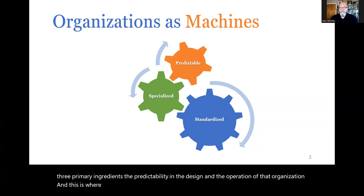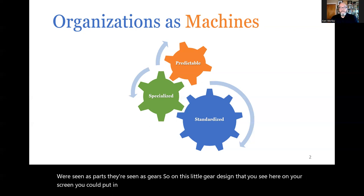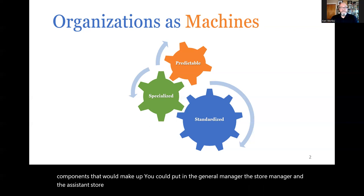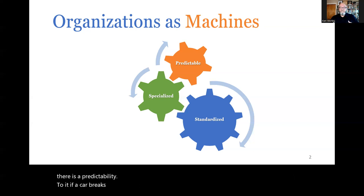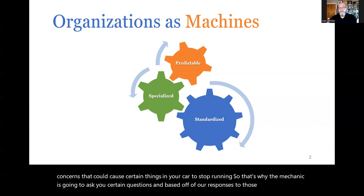This is where it comes into play that even the employees — the people themselves — are seen as parts, as gears. On a gear design, you could put in managers, employees, and owners, or the general manager, store manager, and assistant store manager, depending on the type of organization. There is a predictability to it. If a car breaks down, we take it to somebody who knows there are predictable concerns that could cause certain things in your car to stop running. The mechanic asks you questions, and based on your responses, they start to predict what might be wrong and how to fix the machine — whether it's your lawnmower, your iPhone, or whatever.